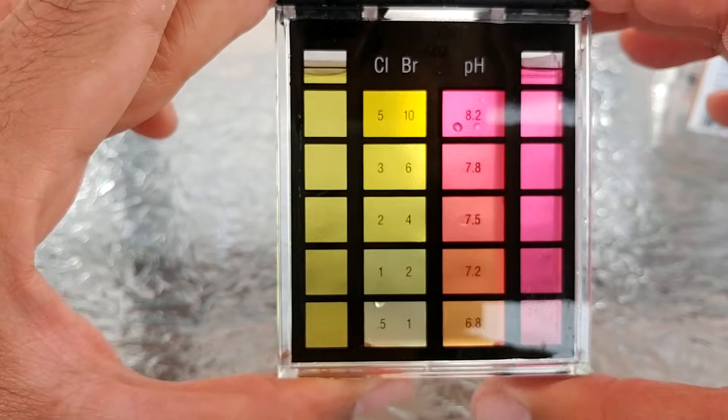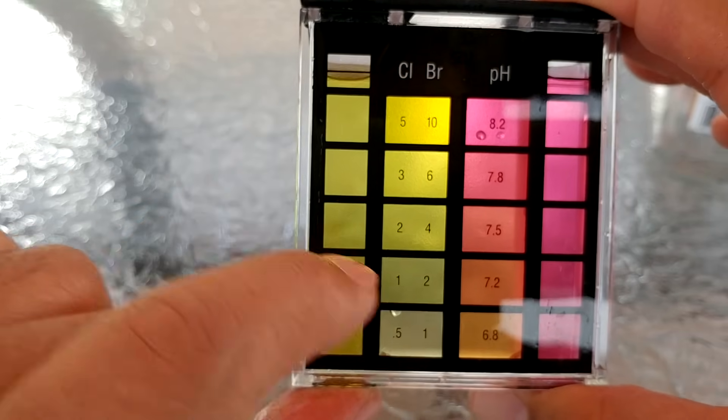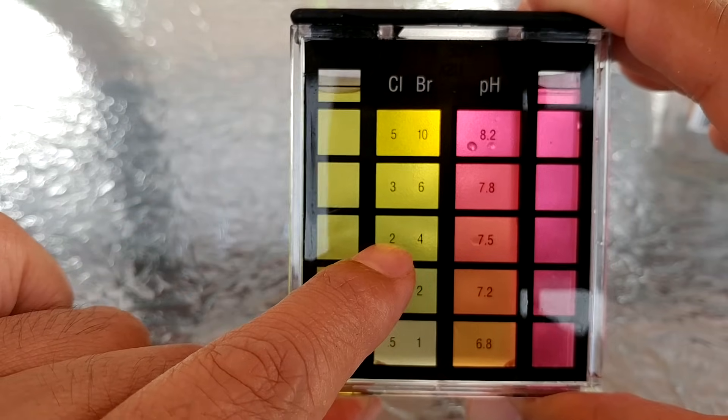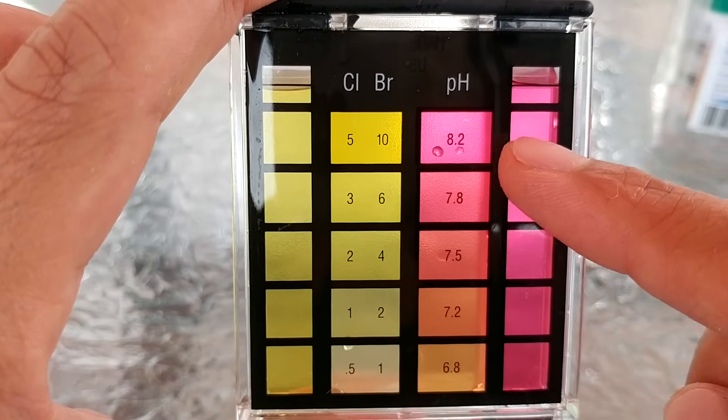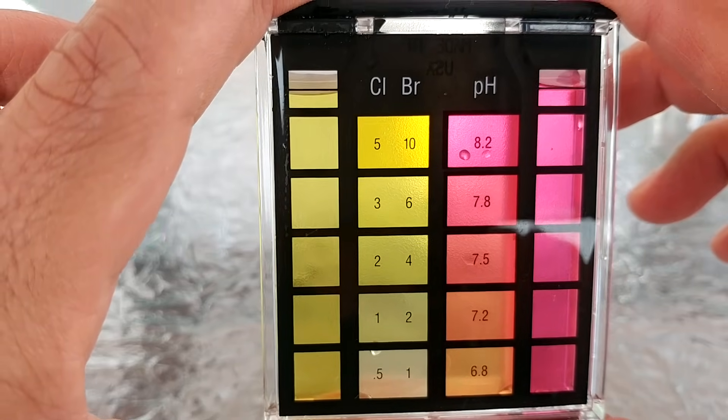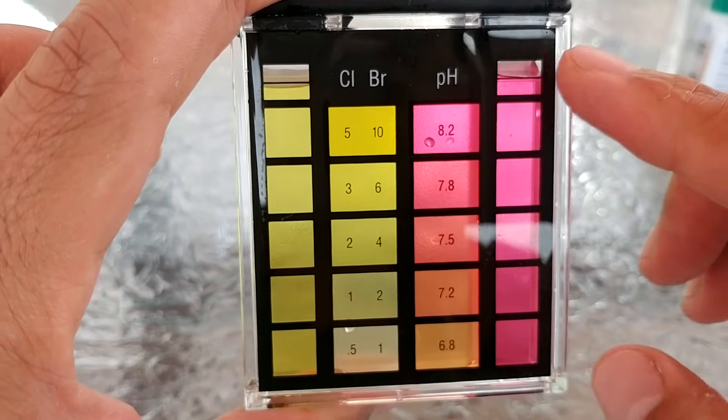If you compare the color right now, the chlorine right now is on the two level, and the pH is at the 8.2. So what this means is I need to adjust my pH so that it will go down to 7.5.